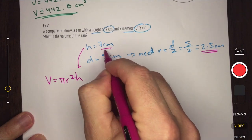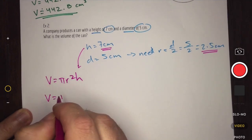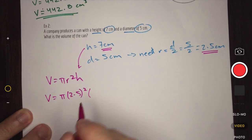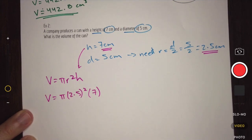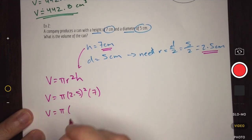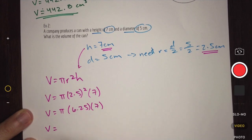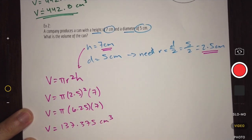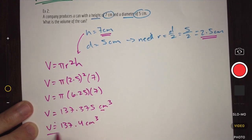With radius 2.5 and height 7, I substitute into the formula: volume equals pi times (2.5) squared times (7). Following BEDMAS, I square 2.5 first to get 6.25, then rewrite the height of 7. Calculating all together gives 137.375 centimeters cubed. Since I'm working in centimeters, I round to one decimal place, giving a final answer of approximately 137.4 centimeters cubed.